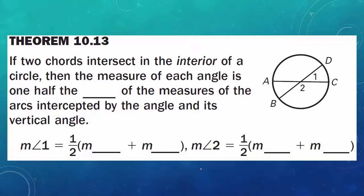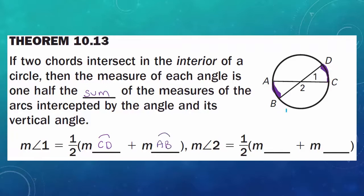Theorem 10.13: If two chords intersect in the interior of a circle, then the measure of each angle is one-half the sum of the measures of the arcs intercepted by the angle and its vertical angle. A helpful memory tip: the two chords crossing inside the circle looks like an addition symbol, so you're adding the intercepted arcs. The measure of angle 1 is one-half the measure of arc CD plus arc AB. The measure of angle 2 is one-half the measure of arc BC plus arc AD.